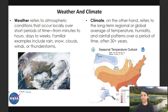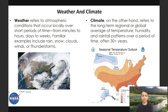The terms weather and climate are sometimes confused, though they refer to events on broadly different spatial and temporal scales. Weather tells you what to wear each day; climate tells you what type of clothes to have in your closet. Weather refers to atmospheric conditions that occur locally over short periods of time — from minutes to hours, days to weeks. Climate, on the other hand, is a long-term regional or global average of temperature, humidity, and rainfall patterns over a period of time, usually 30-plus years.